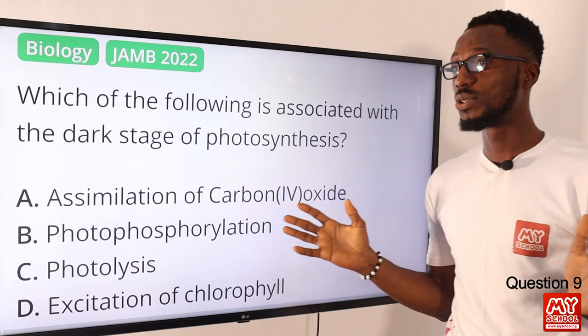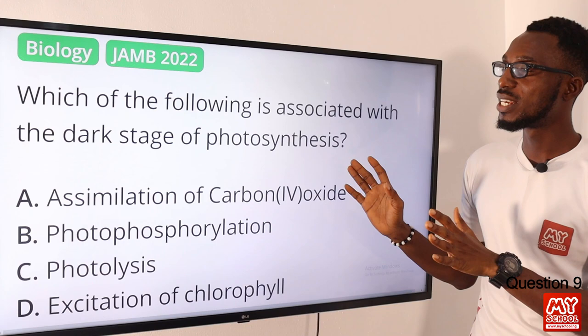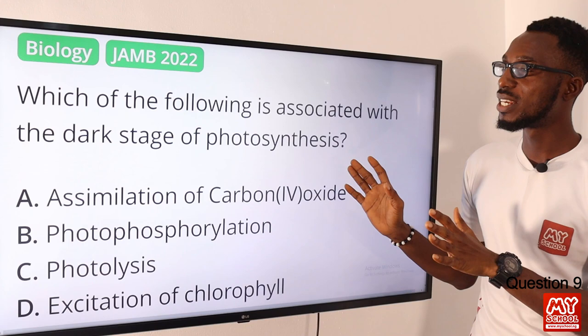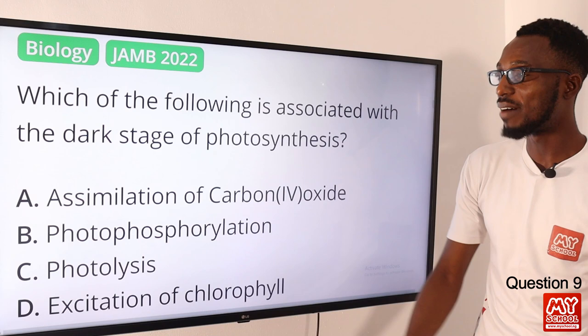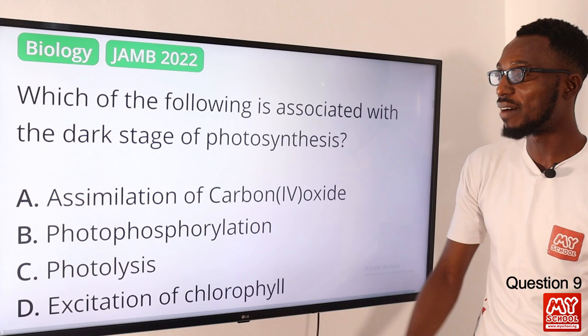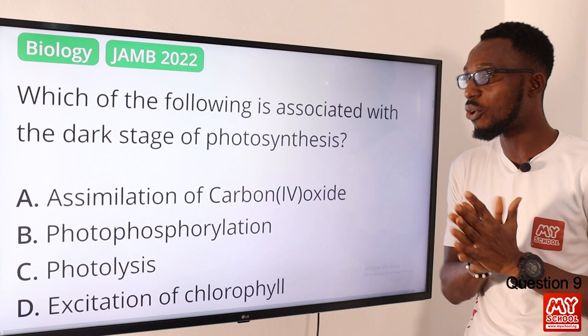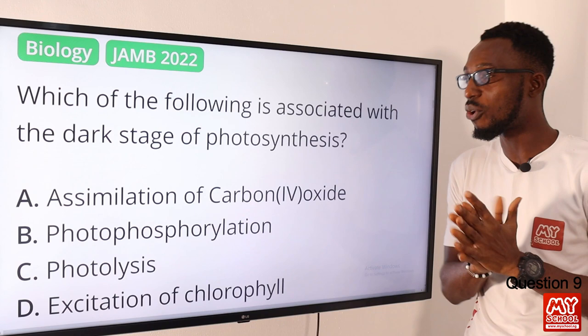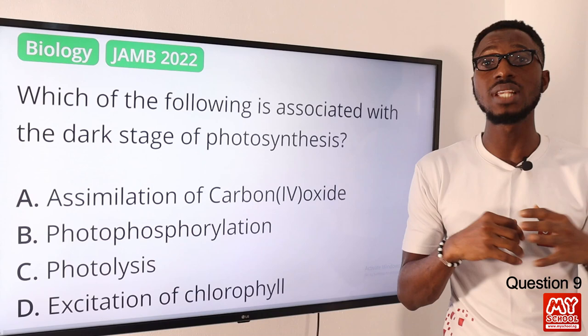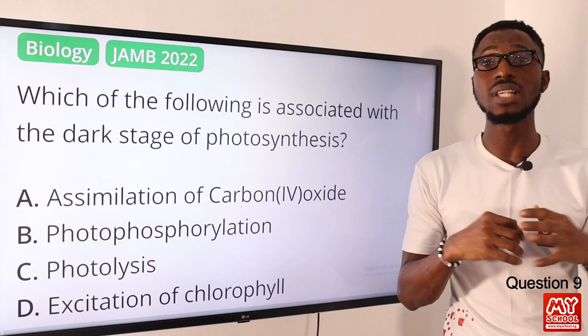Question nine: which of the following is associated with the dark stage of photosynthesis? Photosynthesis has a light stage — which involves photolysis of water and occurs in the presence of sunlight — and a dark stage, which occurs in the absence of light and involves the assimilation of carbon dioxide. Option A summarizes what happens during the dark stage. Option C describes the light stage. The correct option is A.